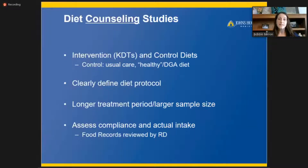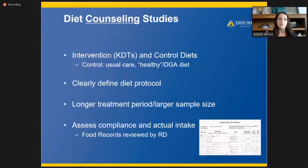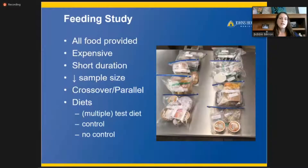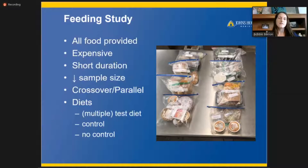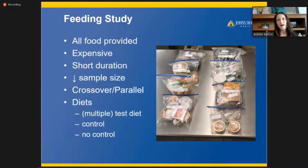The records must be reviewed by the dietitian and the participant together to ensure that the record has enough details and amounts that it can be analyzed for quantitative data. In a feeding study, all food and drinks are prepared, weighed, and served or packed out from large research kitchens. This is extremely labor-intensive for the dietitians to plan and for the kitchen staff to make, and can be fairly expensive. Compared to diet counseling studies, they're typically shorter and have fewer patients. This is the most rigorous type of study, but it may not need to be randomized or controlled depending on the study aims.